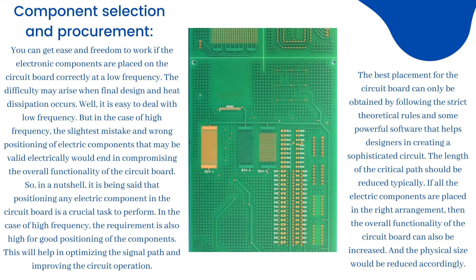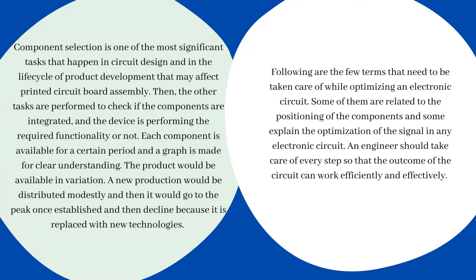Proper positioning will help in optimizing the signal path and improving circuit operation. The best placement for the circuit board can only be obtained by following strict theoretical rules and using powerful software that helps designers create a sophisticated circuit. The length of the critical path should typically be reduced. If all electric components are placed in the right arrangement, the overall functionality of the circuit board can be increased and the physical size reduced accordingly. Component selection is one of the most significant tasks in circuit design and product development lifecycle, affecting printed circuit board assembly.